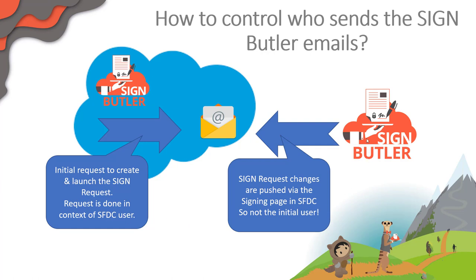Now, when somebody goes to the Signbuttler page and actually signs the document, rejects the document, or whatever action they take, mails have to be sent from the push that this Signbuttler page gives to Salesforce.com. That is more difficult to control because in that case you are not anymore in the context of the initial user that sent out the document.